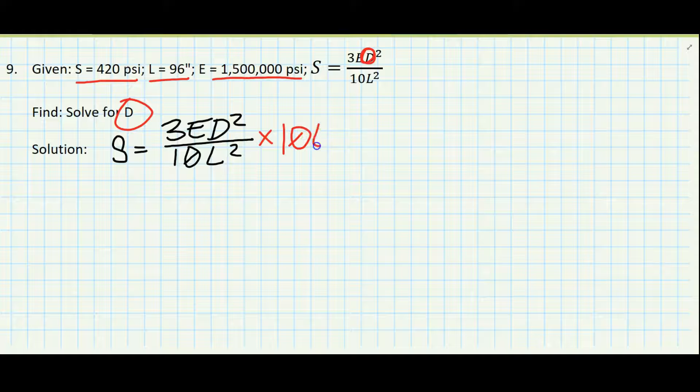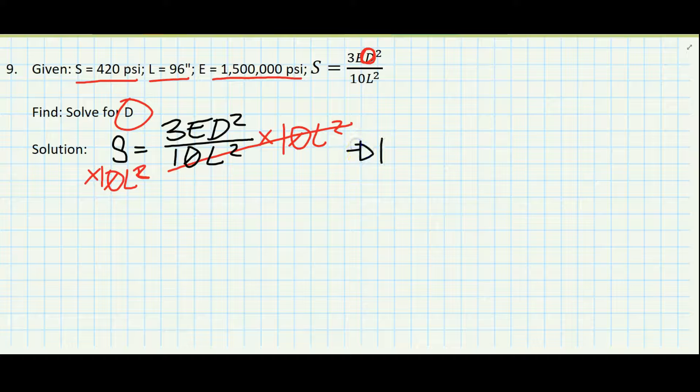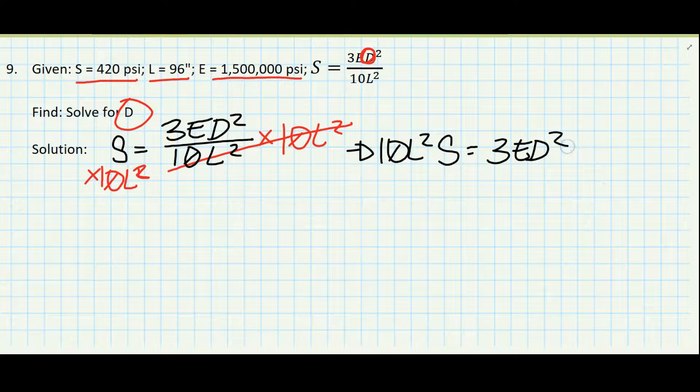First thing we can do is multiply both sides by ten L squared to get rid of ten L squared on the right side. So this leads our equation to ten L squared times S equals three E D squared.